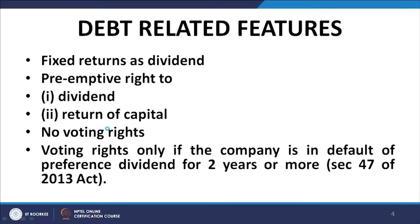I explained the debt-related features of preference shares. They usually carry a fixed rate of dividend. They have preemptive rights just like the rights of lenders over equity shareholders in so far as payment of returns — that is dividend or interest as the case may be — and also rights in respect of the repayment of capital in the event of winding up of the company. Preference shares have no voting rights in the normal course, as in the case of debt instruments.